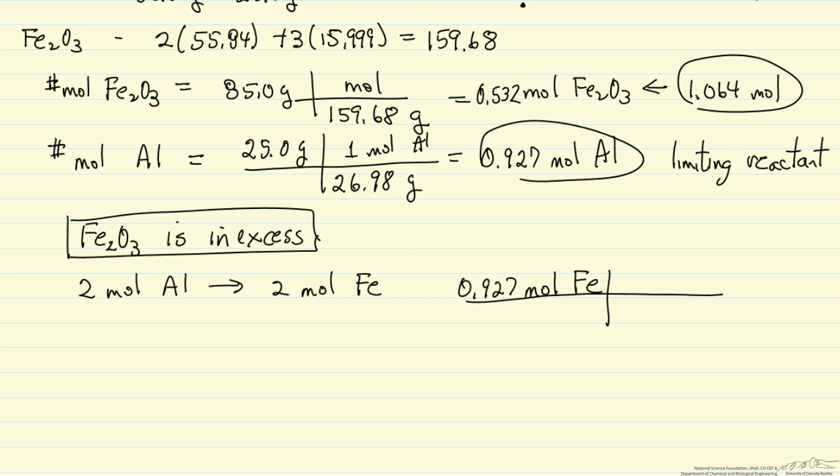Now we go back to the periodic table again. We have 55.85 grams of iron for one mole. If we do this multiplication with units, we get 51.77, or 51.8 grams of iron.